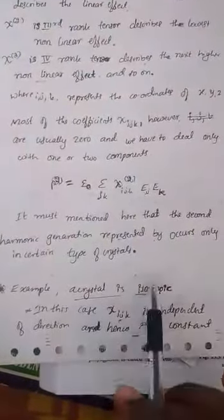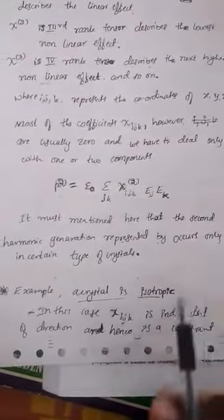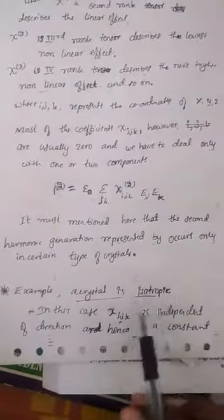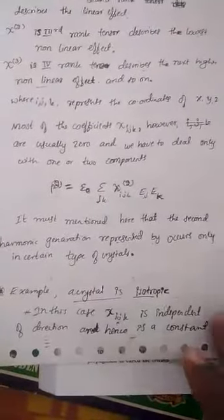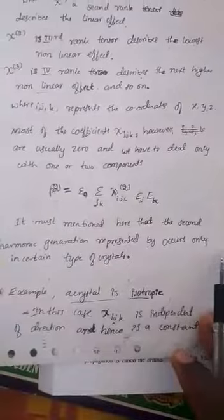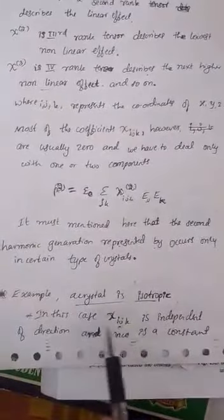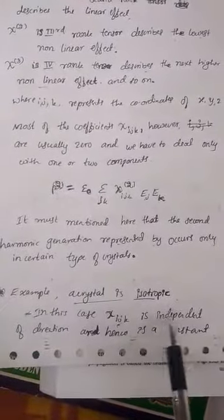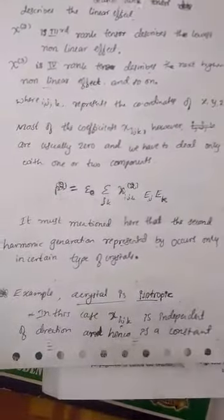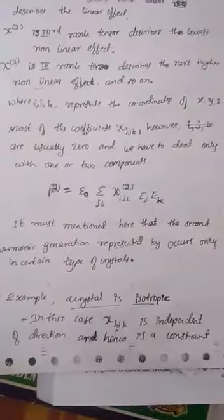For example, consider an isotropic crystal, meaning all properties are the same in all directions. In this case, χᵢⱼₖ is independent of direction and hence it is a constant.